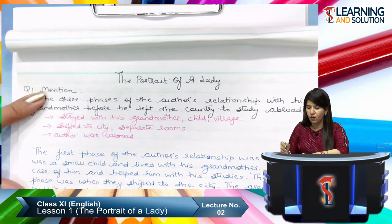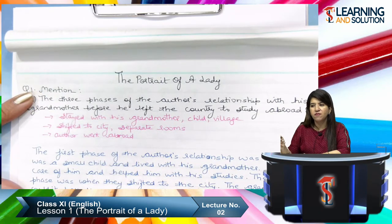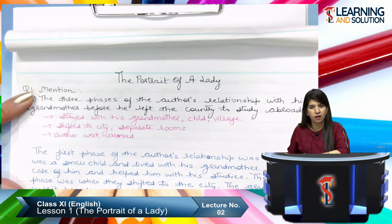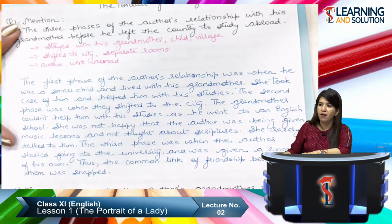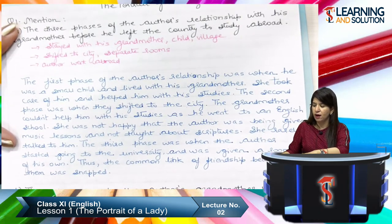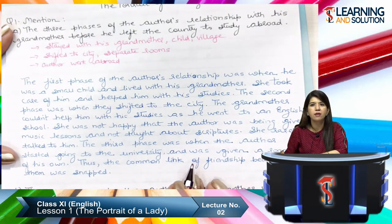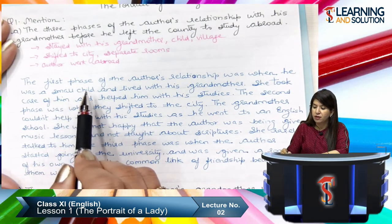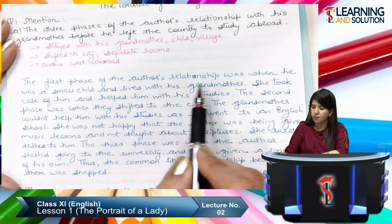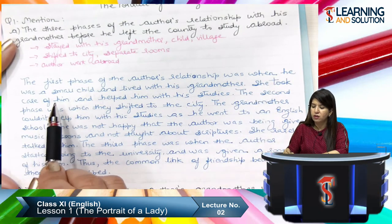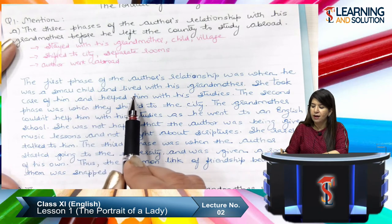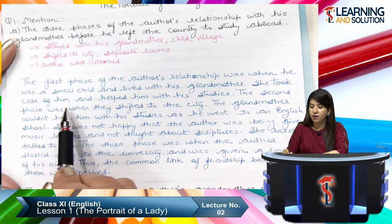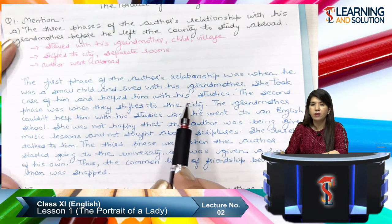I have tried to give you the value points here. You can look at these points, keep them in mind, and then develop your own answer. For your help, I have also written a model/sample answer. The first phase of the author's relationship was when he was a small child and lived with his grandmother — she took care of him and helped him with his studies.